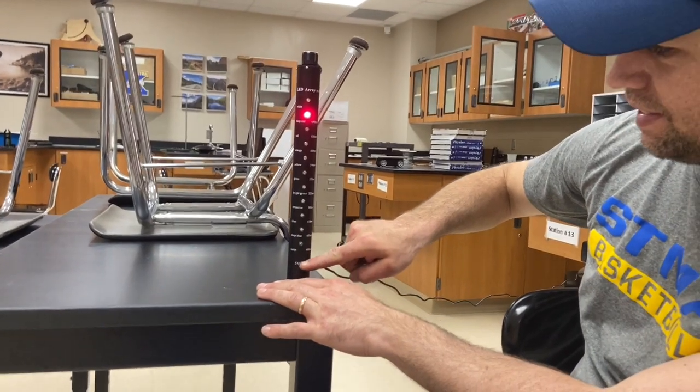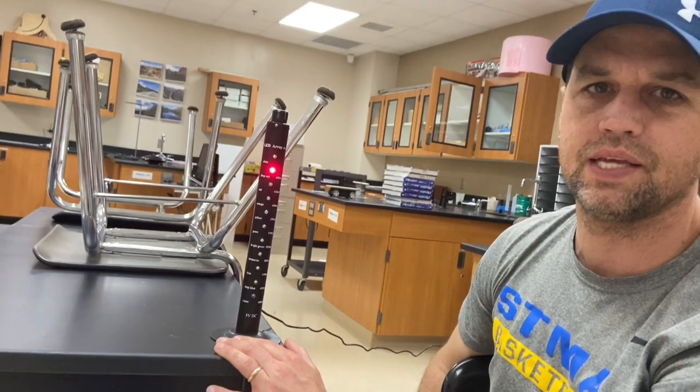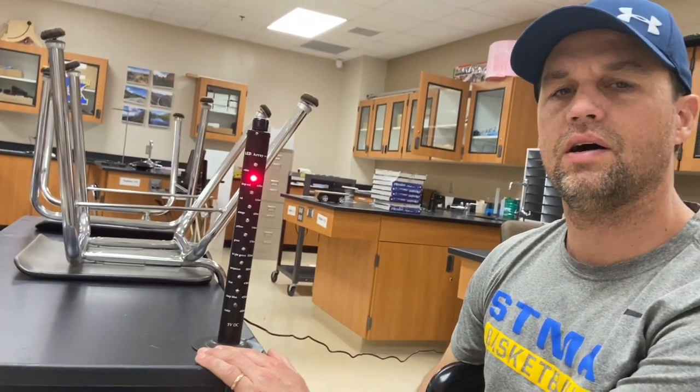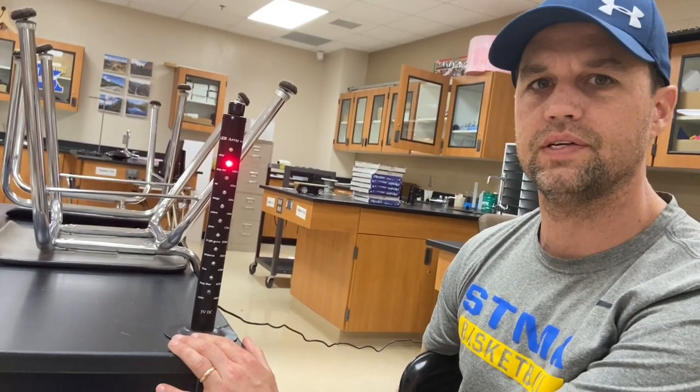Then ultraviolet is just after violet, and then you have x-rays and gamma rays. And all of those different types of light are really the same thing. They're alternating electric and magnetic fields.